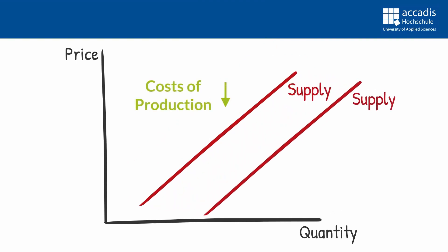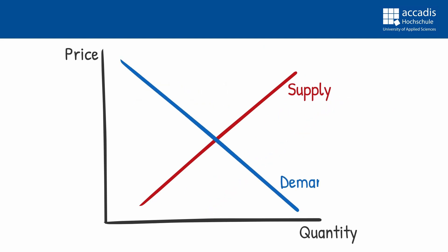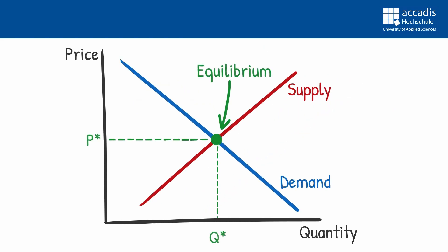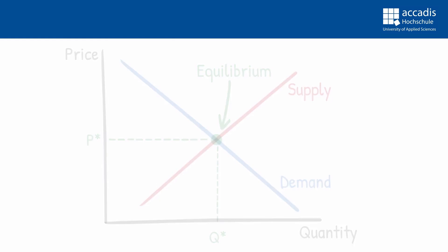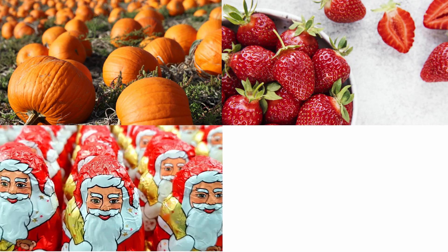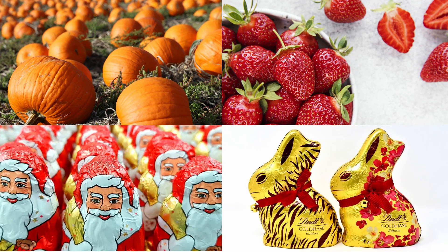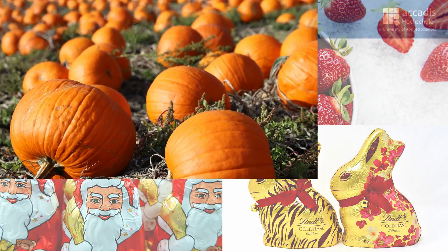So there we have it. This is our representation of any given market we try to analyze. From now on, we will take this model and apply it to four different markets you should all be familiar with: the markets for pumpkins and strawberries between June and October, as well as the markets for chocolate Santas in December and for chocolate bunnies in May. So let's start with pumpkins.